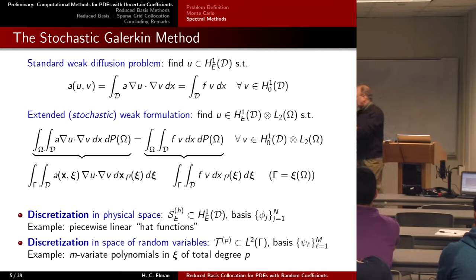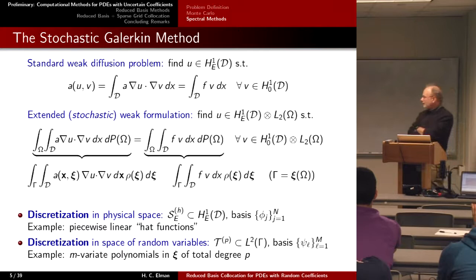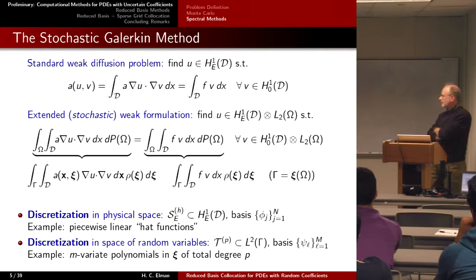There are variants of Monte Carlo that might be faster. My goal here is to compare Monte Carlo to what I'm going to discuss, just to highlight that we are well aware these ideas exist. Instead, I want to talk about a different class of methods developed in the last 20 years called spectral methods — specifically, spectral methods for doing stochastic modeling.